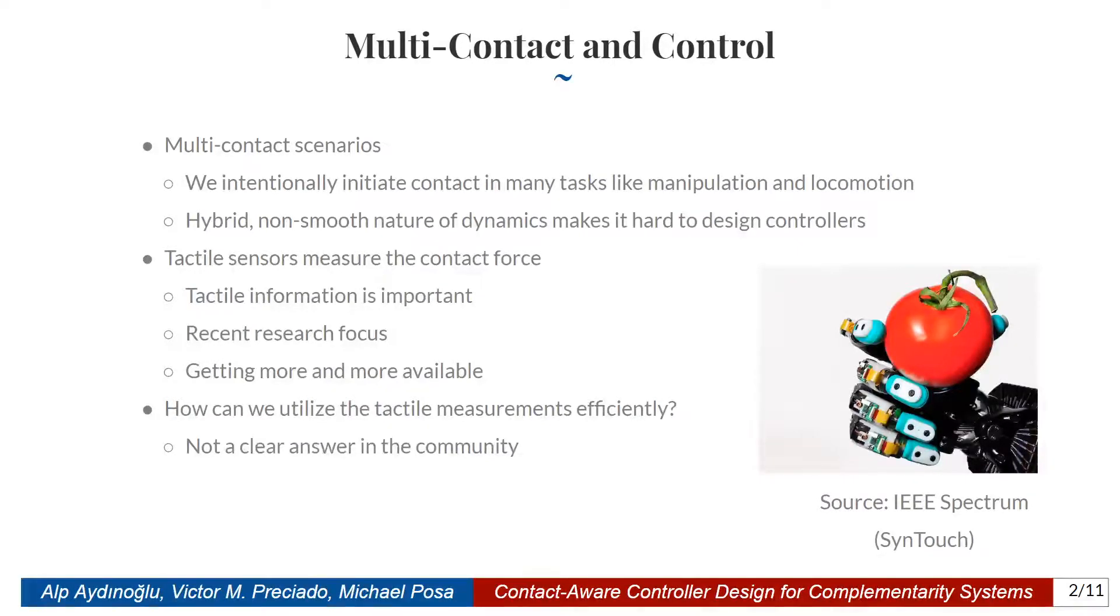One way to attack this problem is utilizing tactile information. Many of you will agree that doing a manipulation task is much harder if one is wearing heavy gloves because of the lack of tactile information. This is a simple example of why tactile information is important. There is a lot of research focus on tactile sensors, and they are getting more available each day. On the bottom right corner of the screen, you can see a robotic hand designed by a startup company which has tactile sensors with the hope of achieving dexterous manipulation tasks. Even though we are getting more access to these tools, there is not a clear answer in the community on how to design controllers for such systems and use this tactile information efficiently.